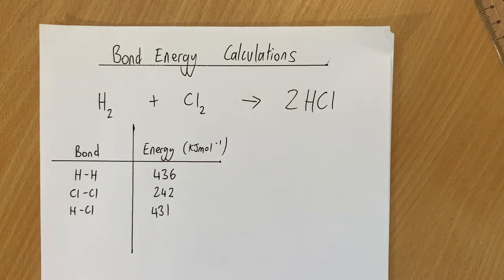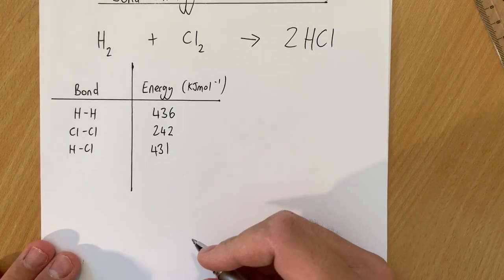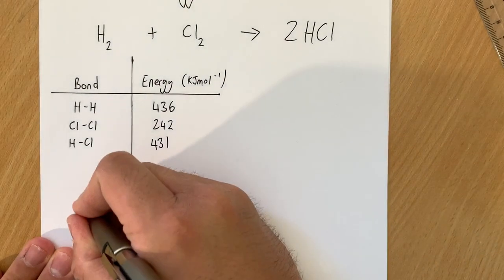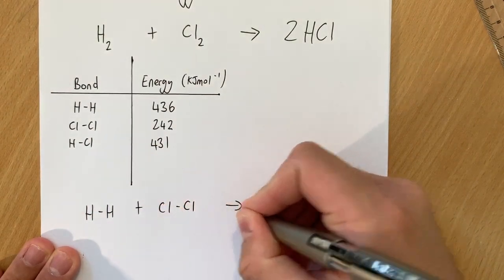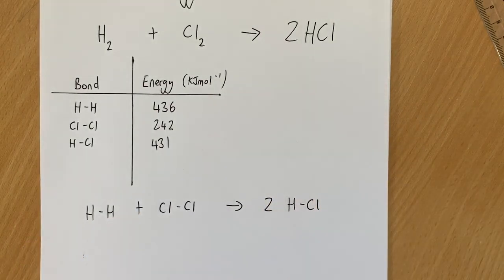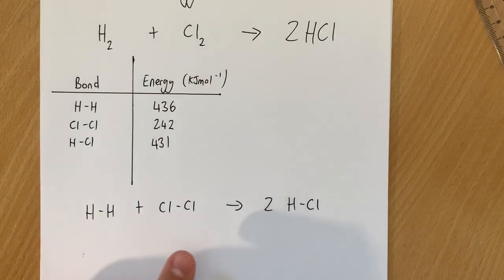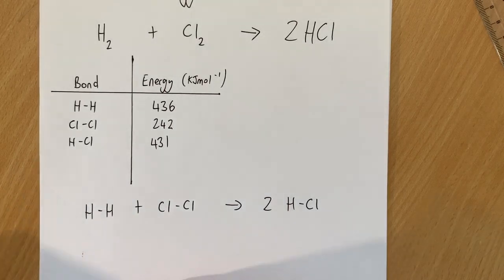Now AQA tend to show what the molecules look like as part of their questions, so they would show you possibly something that looked like this: H-H plus Cl-Cl makes two H-Cl's like that so you can see the bonds. Now obviously every line, here and here, that represents a covalent bond that's going to be broken or made during this reaction.